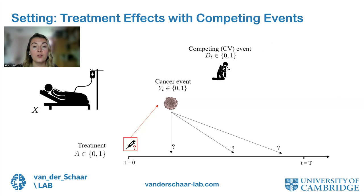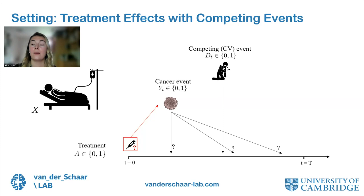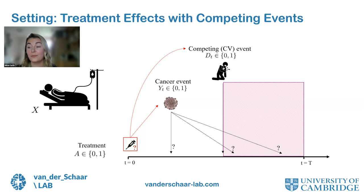Competing events are other events that can occur and stop the actual event of interest from happening. For example, we consider cardiovascular events — if a patient dies of a heart attack, they can no longer have the cancer event. Conceptually, if a patient had a cardiovascular competing event at a point in time, we can no longer observe anything after that. We're now interested in how to estimate treatment effects when there's not only a main event but also a competing event.